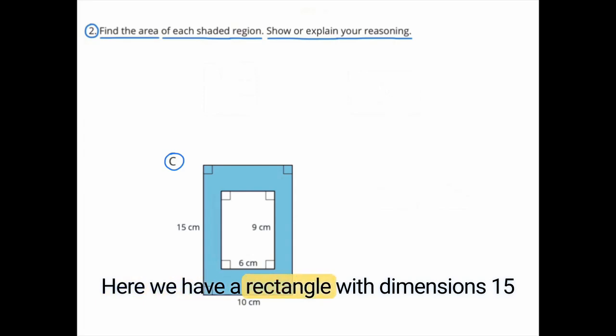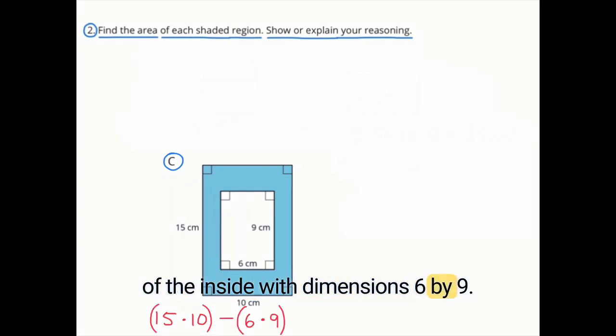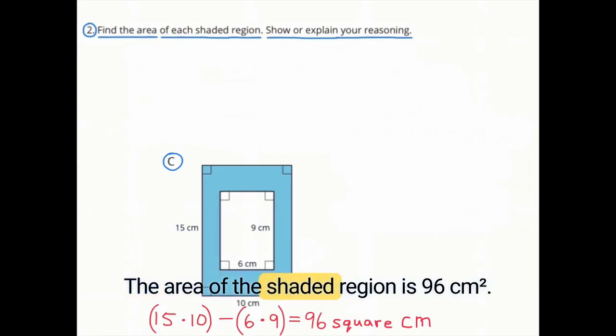C. Here we have a rectangle with dimensions 15 by 10 and a smaller rectangle cut out of the inside with dimensions 6 by 9. The area of the shaded region is 96 square centimeters.